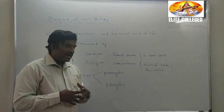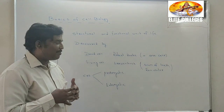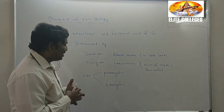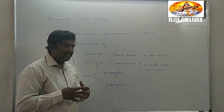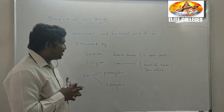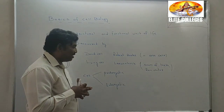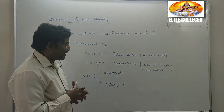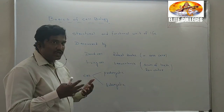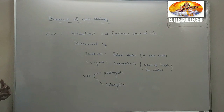What is a prokaryotic cell and what is a eukaryotic cell? If you define a prokaryotic cell, the term 'pro' itself indicates it is a cell with a primitive nucleus. Whereas eukaryote is the cell with a well-defined nucleus. We are going to study in detail about prokaryotes and eukaryotes and their differences.